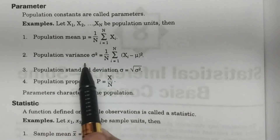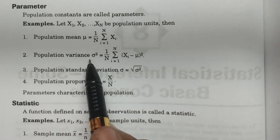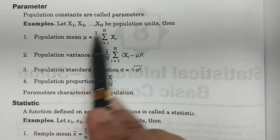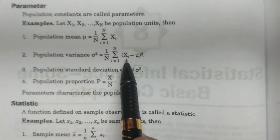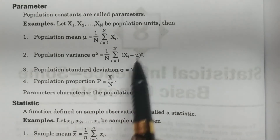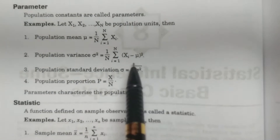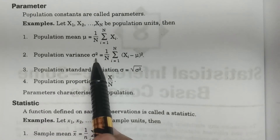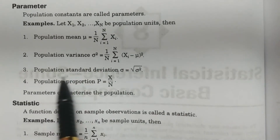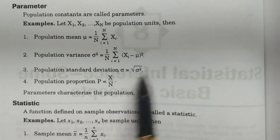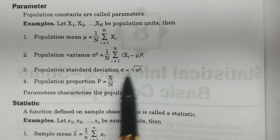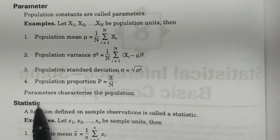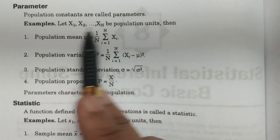Similarly, another parameter is population variance sigma square, which is 1 by N, summation i equals 1 to capital N of (Xi minus mu) whole square, where mu is the population mean. So population mean mu, population variance sigma square, and population standard deviation sigma — you can calculate by taking the square root of variance. Population proportion capital P equals capital X by capital N. These are all called parameters.